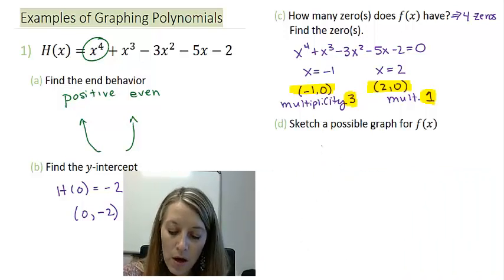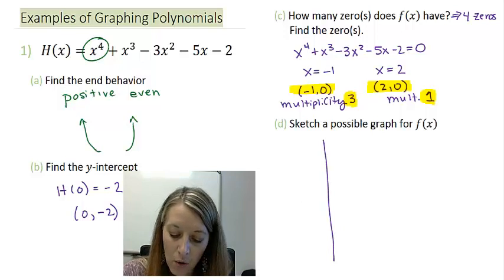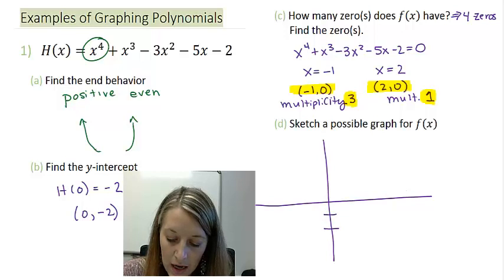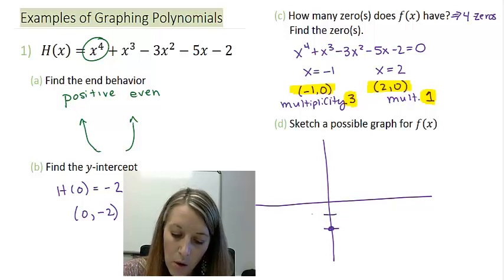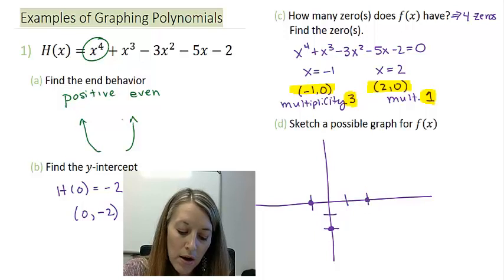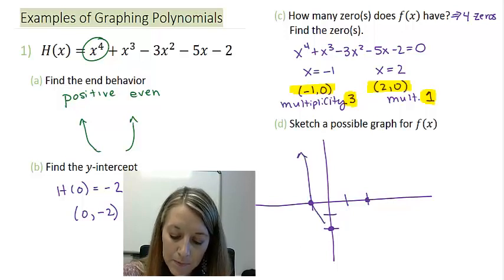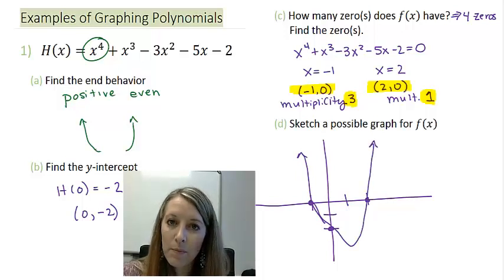Okay. I think that we are ready to graph what we know. We had a y-intercept at negative 2. We had an x-intercept at negative 1. We also had an x-intercept at 2. And we know that our end behavior was going up on both ends. So if I had to put all of this information together, I would guess that I'd come up with a graph something like this.